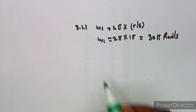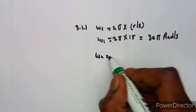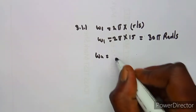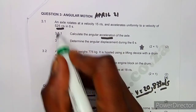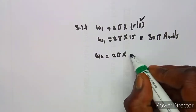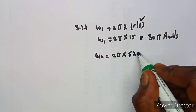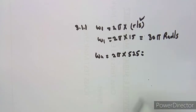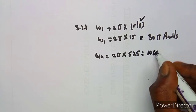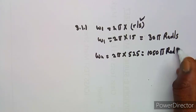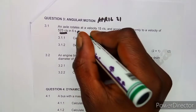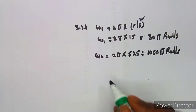Now the second velocity, which is the final velocity ω₂, is going to be 2π again times the number of revs per second. It's in revs per second, so you just multiply: 2π × 525, which gives us 1050π rad/s. The time frame is six seconds.